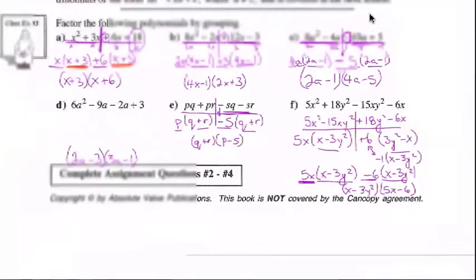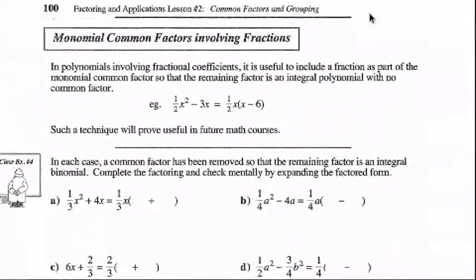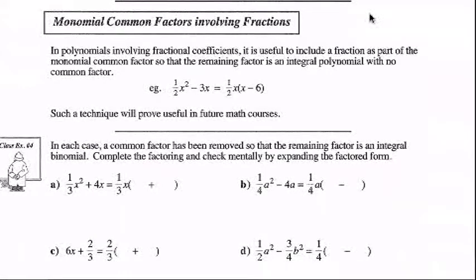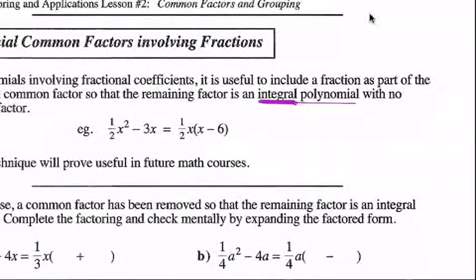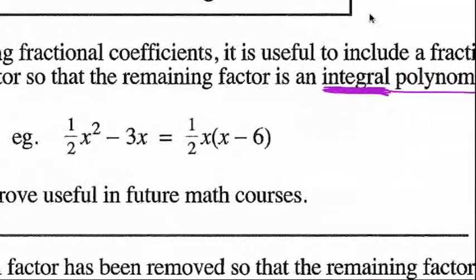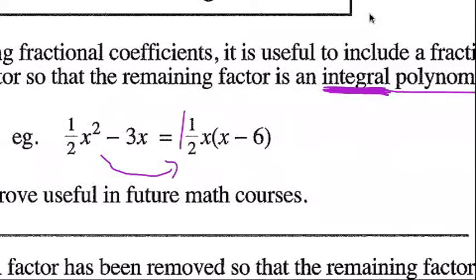Sometimes factoring questions contain fractions. Our next section looks at those kinds of questions. We need to know how to factor out fractions because it helps us later. Basically, if we can produce an integral polynomial — a polynomial with only integers — we can work with it significantly easier. So we factor out fractions to help us work with the expression. Here's an example: (1/2)x² − 3x equals (1/2)x(x − 6).